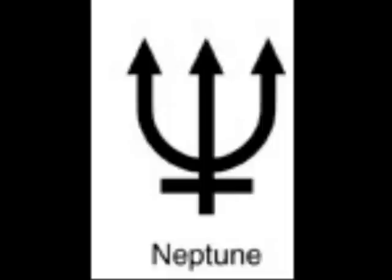Here's Neptune. Neptune has a trident, a three-pronged pitchfork that was his weapon, with a handle on it. This is Neptune.